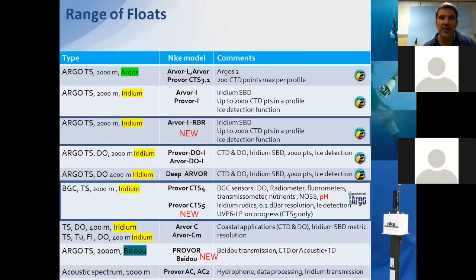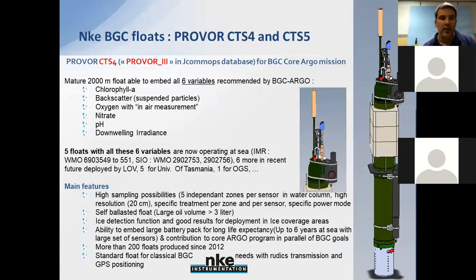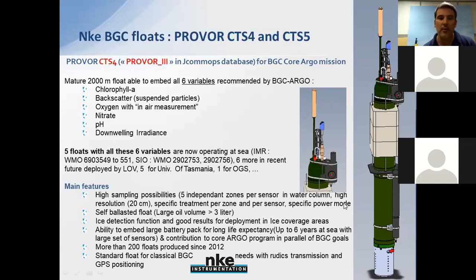NKE has a large set of floats depending on mission, and for the BGC mission the dedicated float is the Provor CTS-4. The Provor CTS-4 is the mature float able to acquire all six variables recommended by BGC Argo — it is the only float at sea today with this full set of sensors. Several units with full configuration are currently at sea, with 20 to 25 more to be deployed in the near future. The CTS-4 is also a self-ballasted float, meaning it handles any kind of density condition, so you can deploy the float without any physical action on the ballast if you change the deployment area. Its dimensions also allow embedding a high battery pack, which is very useful for demanding sensors.